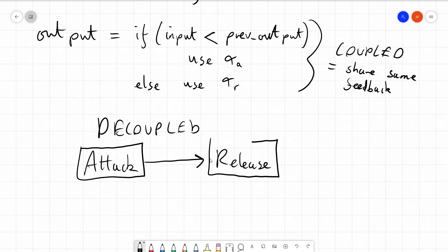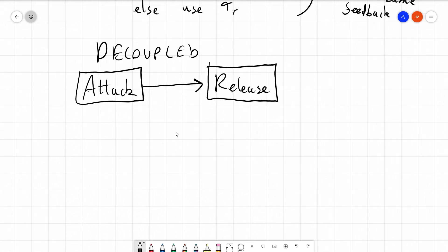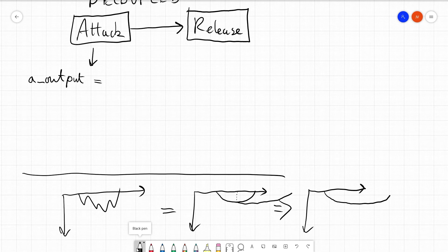And you can actually do this the other way around. You can do the release stage before the attack stage. So the attack stage says, and again this is our peak compressor working on dB values, and remember they're all negative. Output equals attack alpha times the previous output from the attack stage, plus 1 minus attack alpha times input.